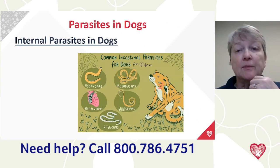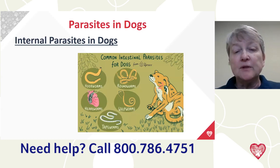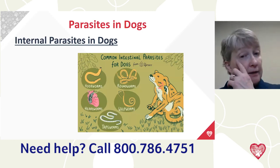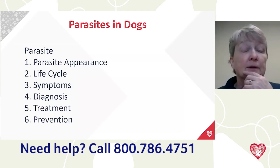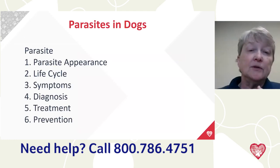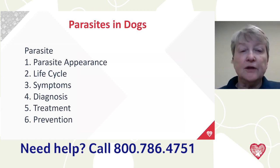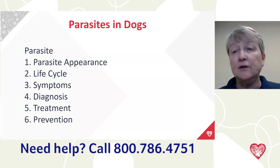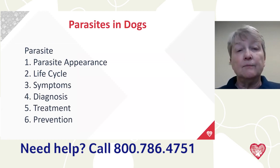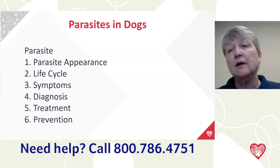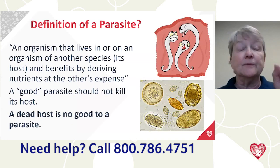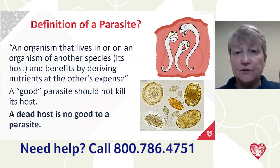Today we're primarily talking about intestinal parasites for dogs: roundworms, hookworms, whipworms, tapeworms, and heartworm — which is not an intestinal parasite but is a commonly seen parasite in dogs. We'll also cover giardia and coccidia. For each we'll discuss appearance, life cycle, symptoms, diagnosis, treatment, and prevention — all broken down consistently in your handout as well.